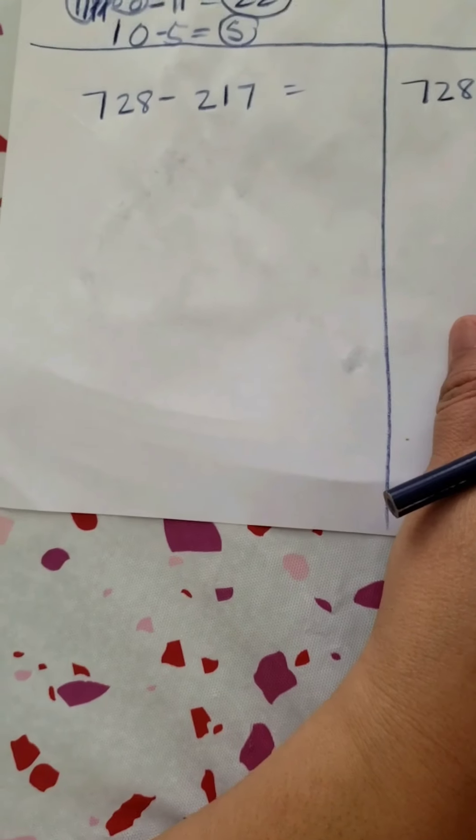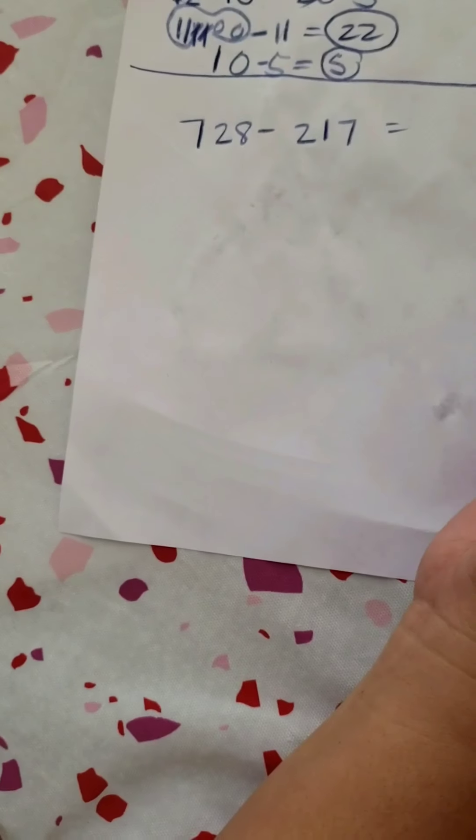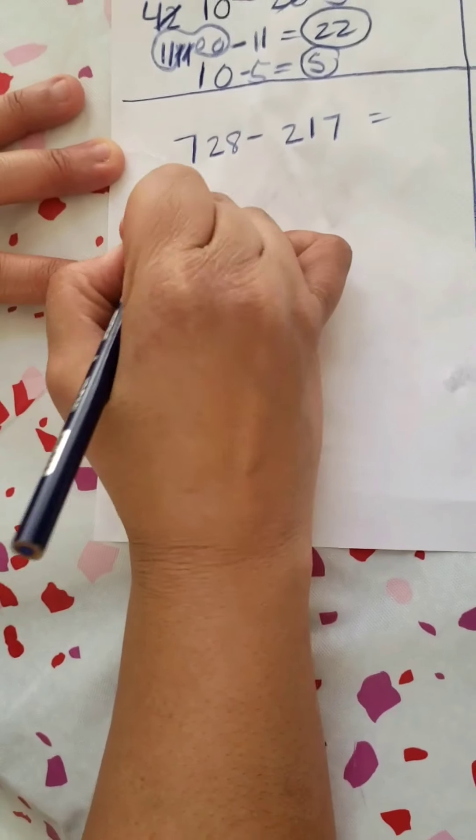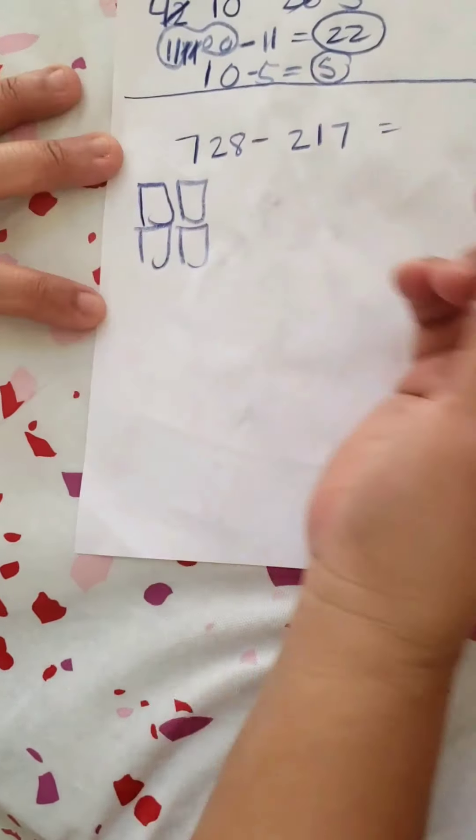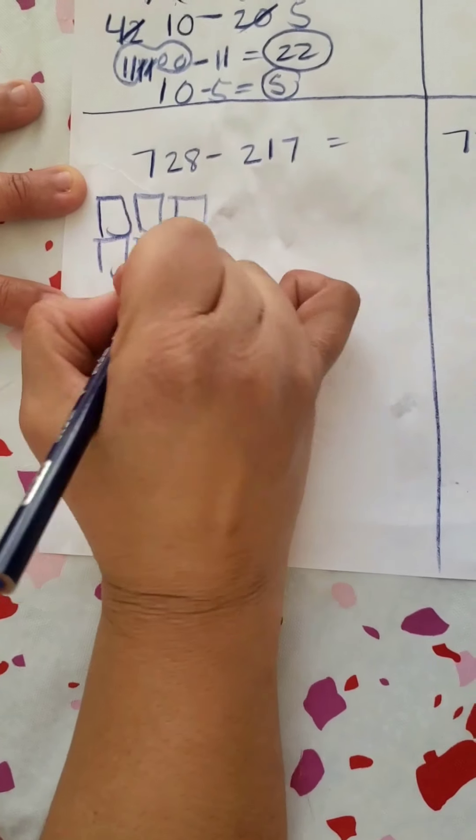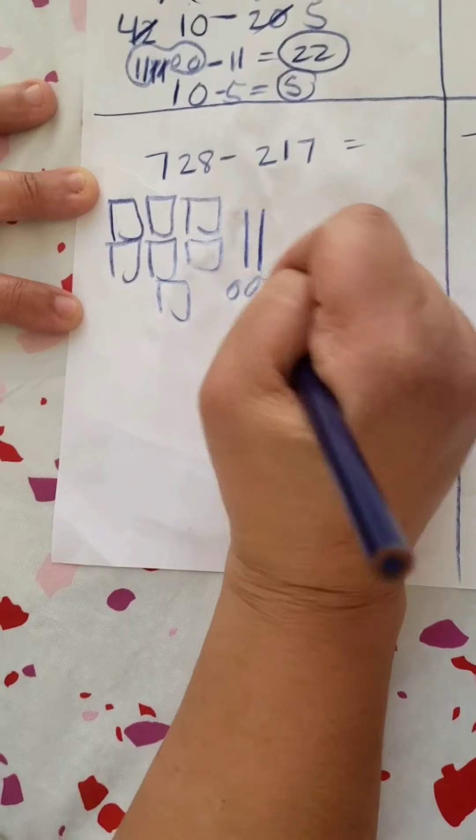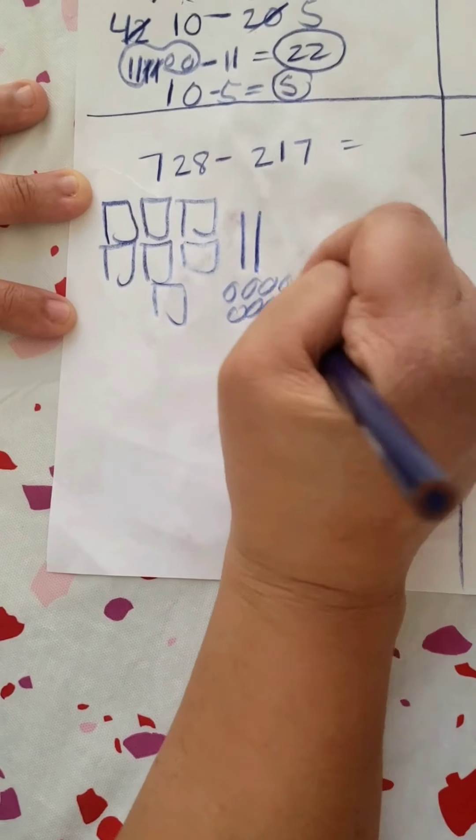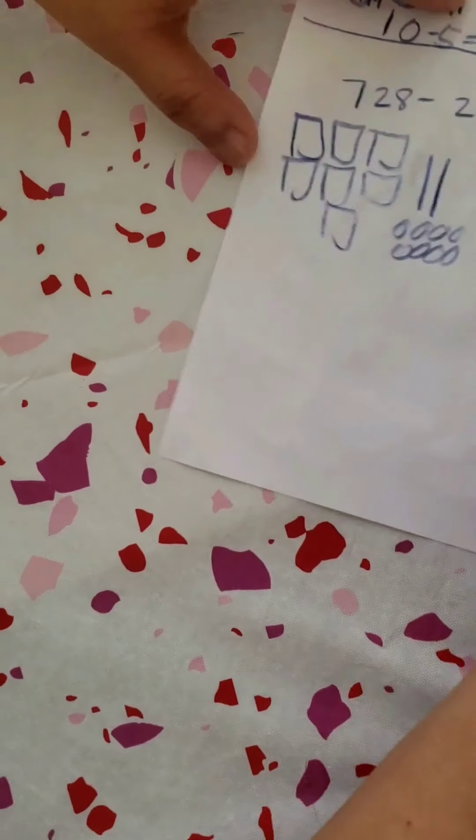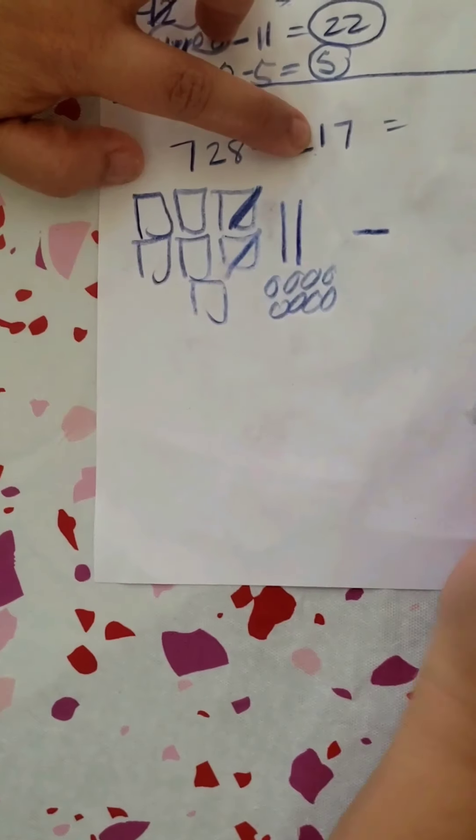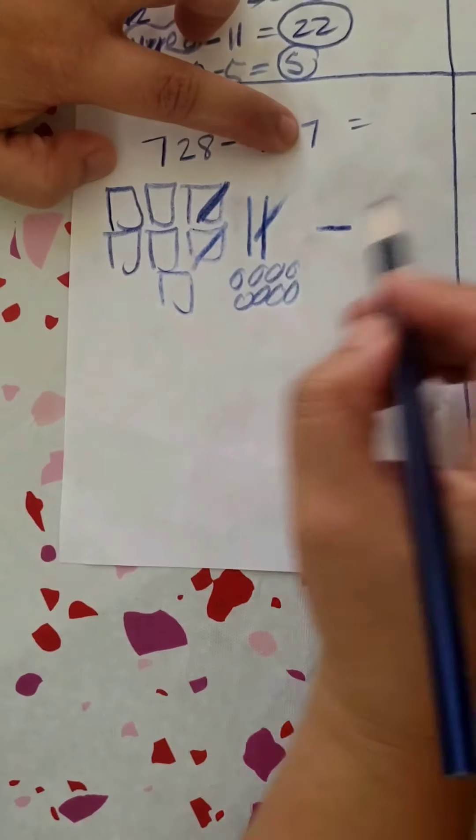Now I'm going to move on to subtraction, and this is going to be three digits. So I'm going to go 7 hundreds, and I'm just going to draw it for you just because this is new for many of us. 1, 2, 3, 4, 5, 6, and 7, my two tens, and my eight ones. Subtracting two hundreds, one ten, and seven ones.